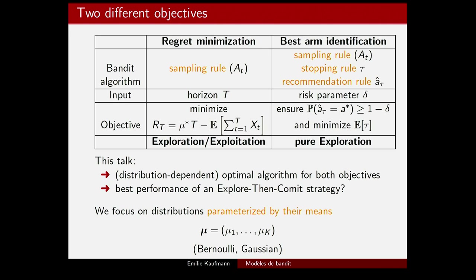There are other variants in the literature, like fixing the budget and minimizing the probability of error, or minimizing simple regret. Today I focus on the fixed confidence framework. In this talk, I present optimal algorithms for both objectives in a problem-dependent sense — on any given mu-bounded instance, achieving optimal rates. We will then discuss the performance of explore-then-commit strategies, which try to use pure exploration tools within a regret-minimizing algorithm.